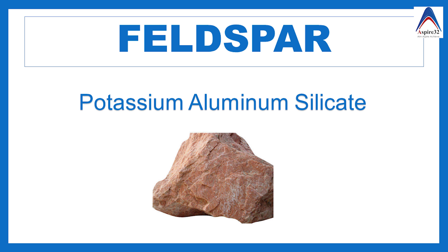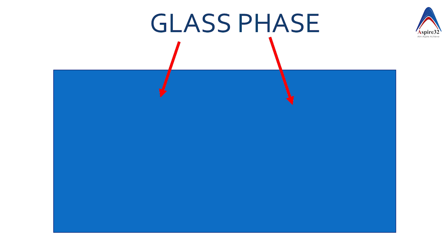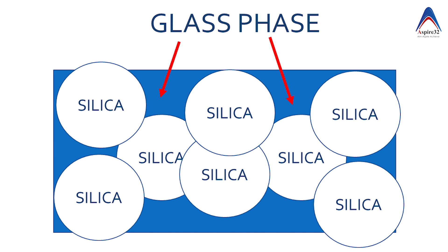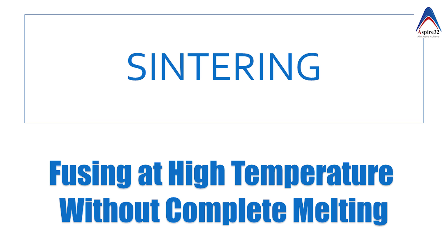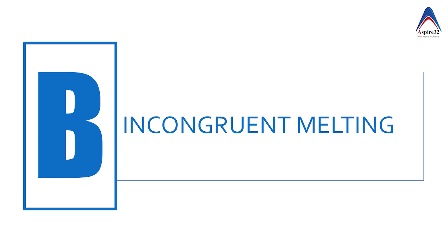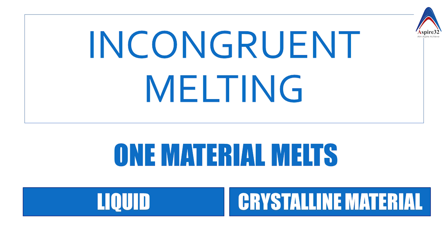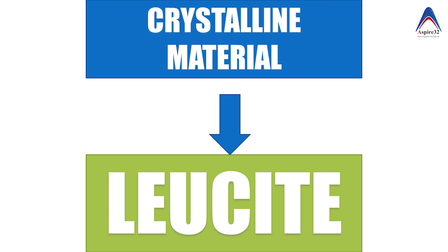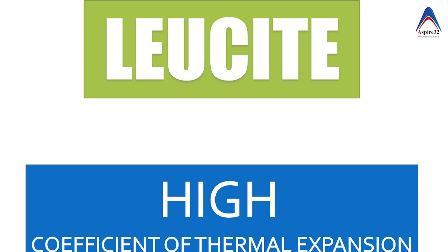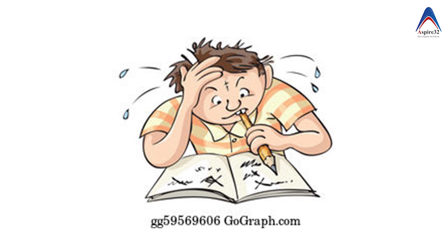Feldspar has two important functions. First, when heated to fusion temperature, it softens and forms a glass phase in which silica particles are allowed to flow and fuse together — this process is called liquid phase sintering. Second, feldspar undergoes incongruent melting, meaning that when it melts it forms both a liquid phase and a crystalline material. The liquid is the glass phase for sintering, and the crystalline material formed is called leucite, which has high aesthetics and a high coefficient of thermal expansion.